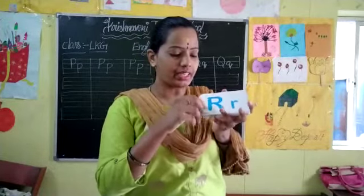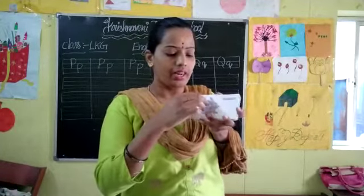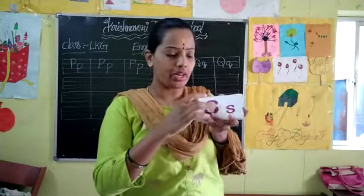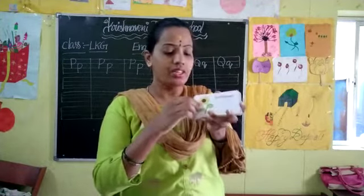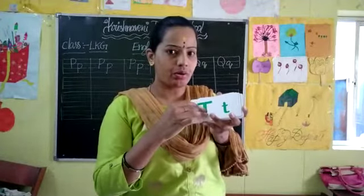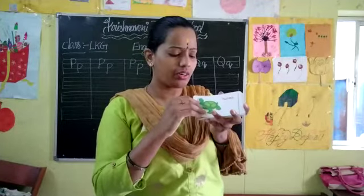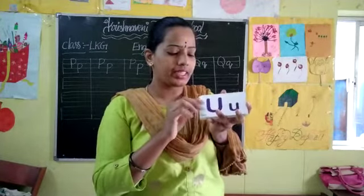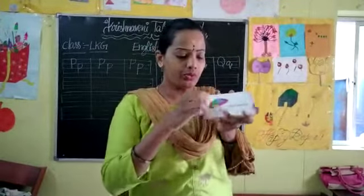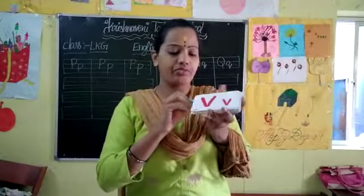And next letter is Q. Capital Q. Q for queen. And next letter is R. Capital R, small r. R for rabbit. R for rabbit. And next letter is S. Capital S, small s. S for sunflower. S for sunflower.